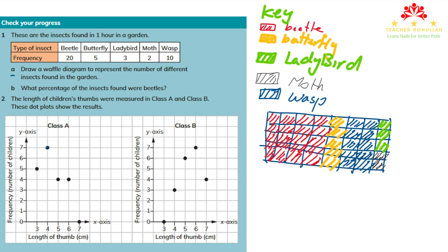Now we have shaded all parts of the waffle diagram: 40 insects total — 20 beetle, 5 butterfly, 3 ladybirds, 2 moth, and 10 wasp. Part b asks: what percentage of the insects found were beetles? The total is 40 and 20 are beetles, so 20 is 50% of 40. The percentage of beetles is 50%.